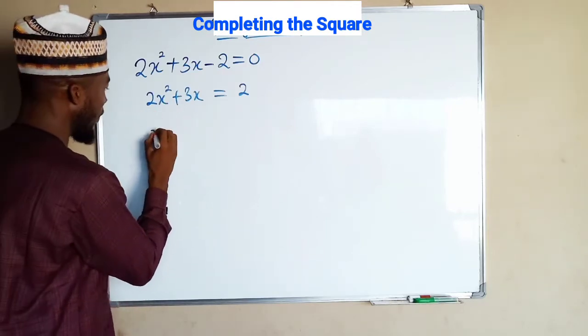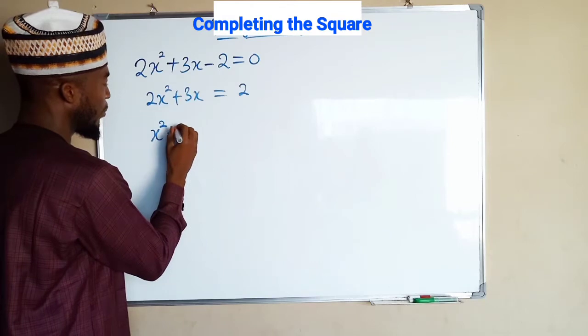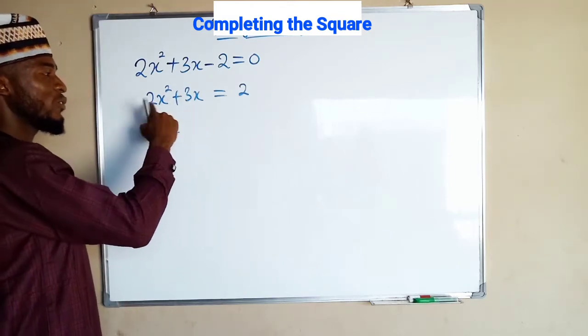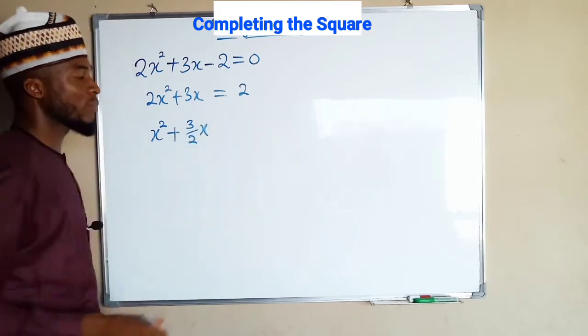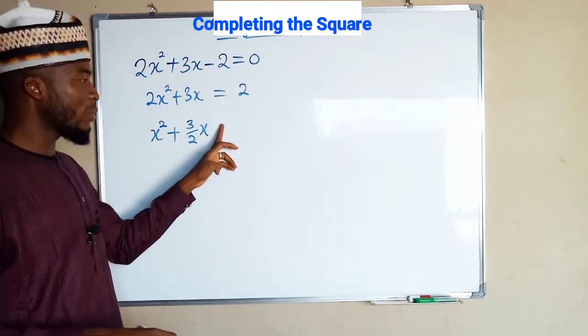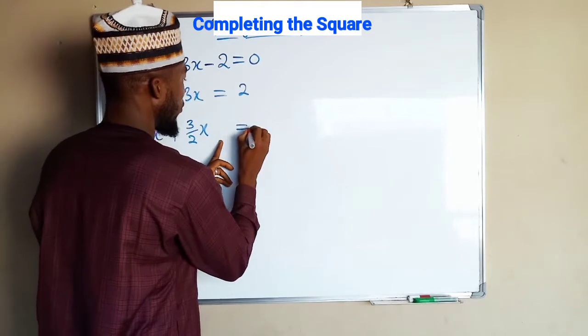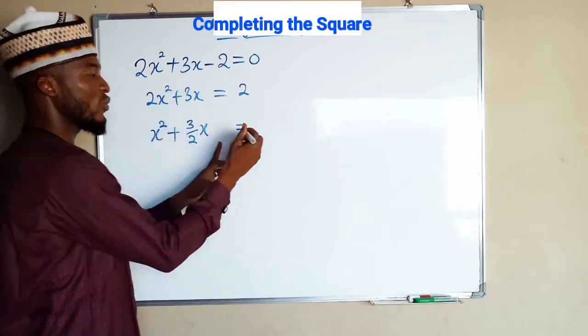So the first term becomes x squared plus 3 divided by 2 is going to make it 3 over 2x. We are going to leave a space here because we are going to add a particular number. So this is equal to 2 divided by 2 is 1.